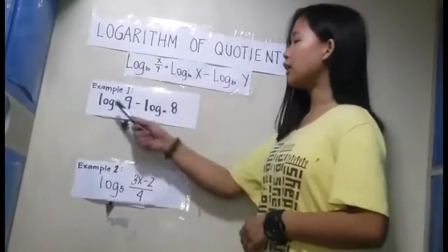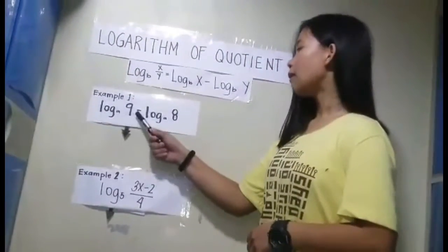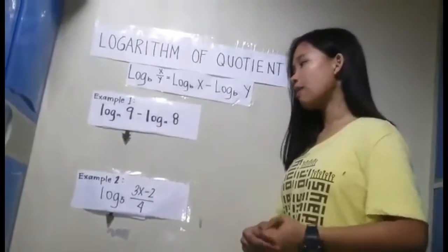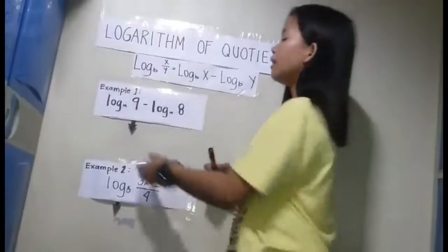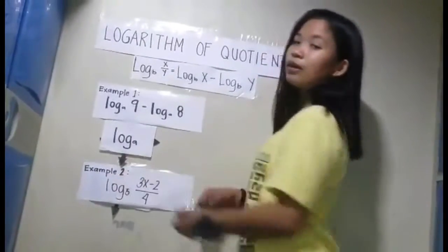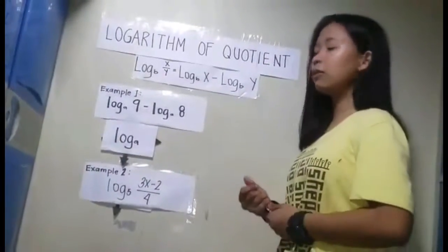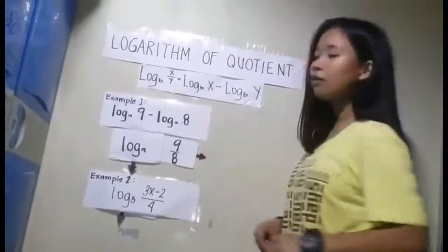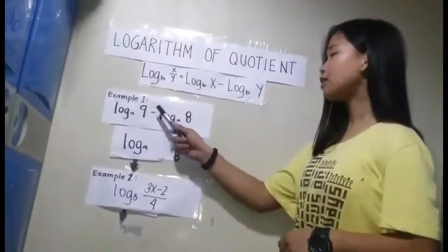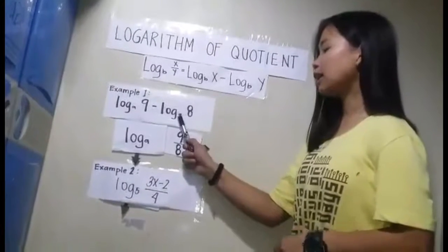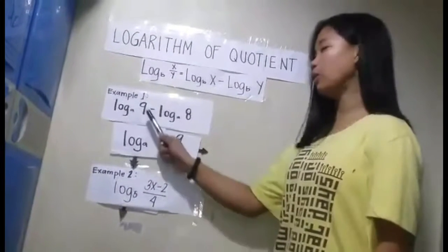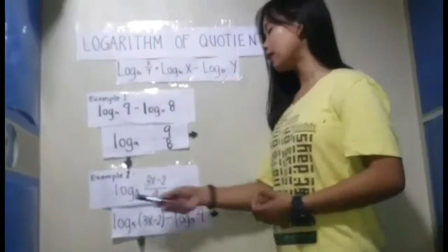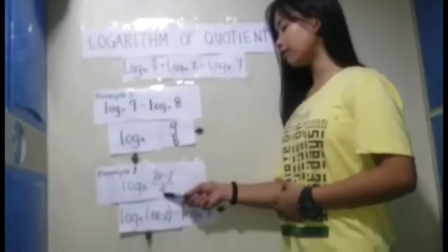Example number 1: the problem is logarithm of 9 to the base A minus logarithm of 8 to the base A. To get the answer, just copy the logarithm and the base A, because it is always the same. 9 and 8 will form into a division. So, logarithm of 9 to the base A minus logarithm of 8 to the base A is equal to logarithm of 9 over 8 to the base A.